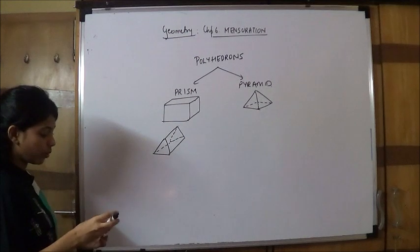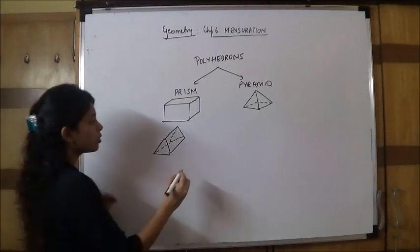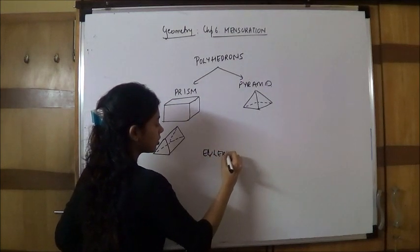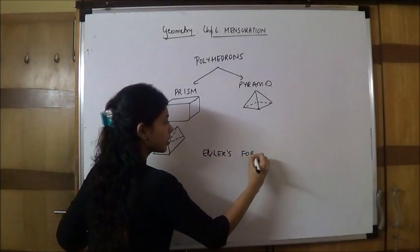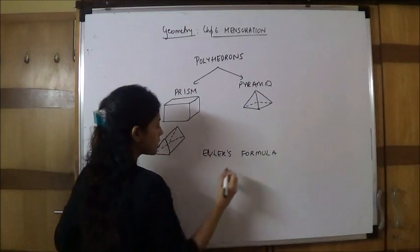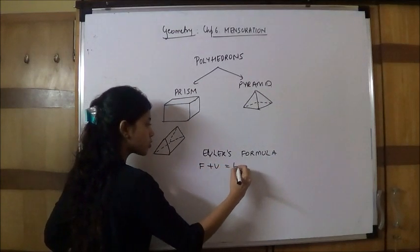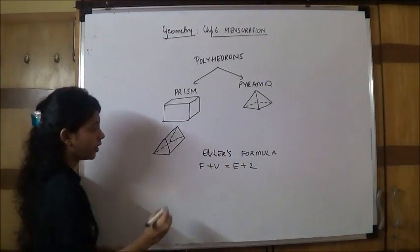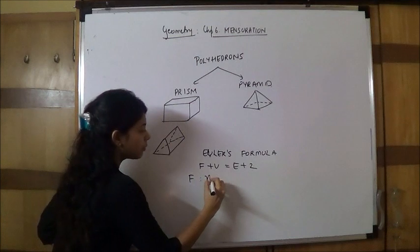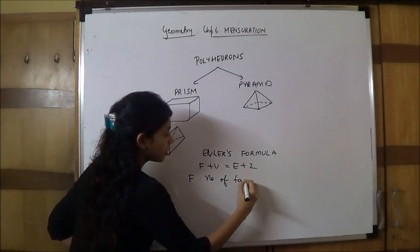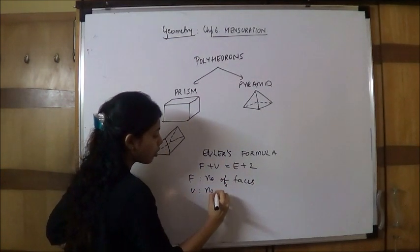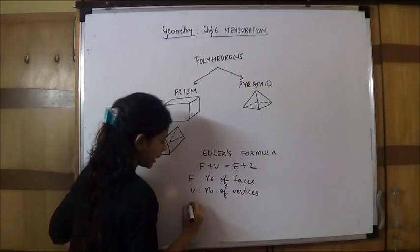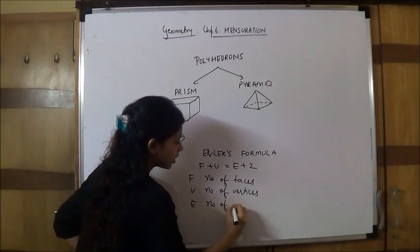Now, we have a concept regarding polyhedrons which is called Euler's formula, which says F plus V equals E plus 2. Now, what is F, V and E? F is number of faces, V is number of vertices, and E is number of edges.